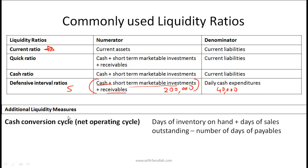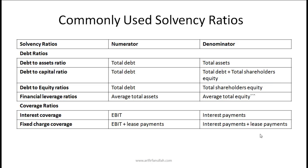Another liquidity measure, also seen in corporate finance, is the cash conversion cycle, also called the net operating cycle. This equals days of inventory on hand plus days of sales outstanding minus the number of days of payables.